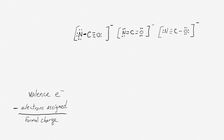For our example of the cyanate ion, we have nitrogen, carbon, and oxygen. Nitrogen should have five valence electrons, carbon should have four, and oxygen should have six. We take the valence electrons for each atom and subtract the electrons assigned to each atom. Assigned electrons include all non-bonding electrons and half of the bonding electrons.